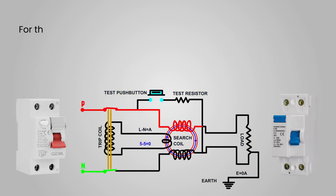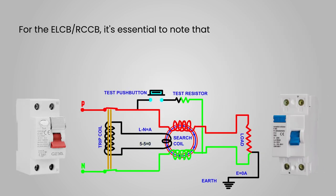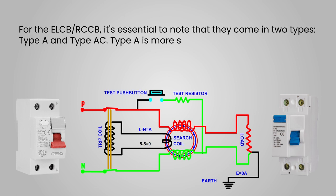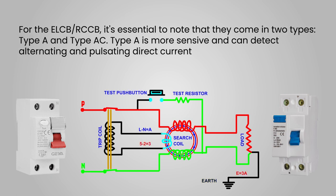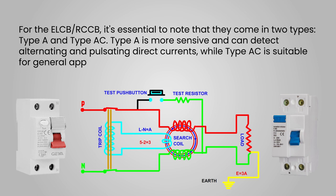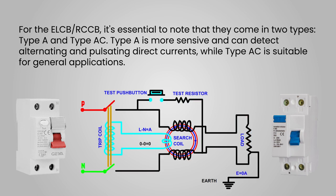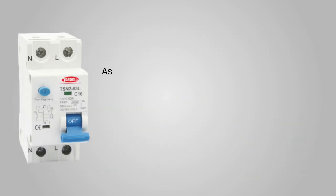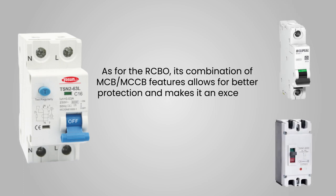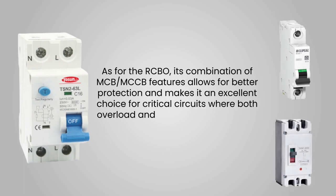For the ELCB-RCCB, it's essential to note that they come in two types: type A and type AC. Type A is more sensitive and can detect alternating and pulsating direct currents, while type AC is suitable for general applications. As for the RCBO, its combination of MCB and RCCB features allows for better protection and makes it an excellent choice for critical circuits where both overload and leakage protection are crucial.